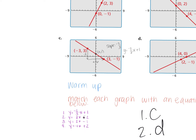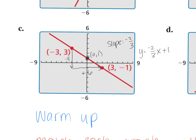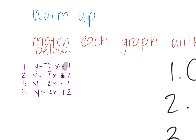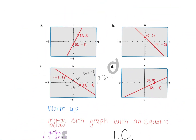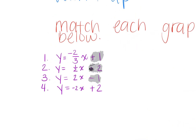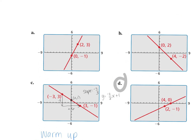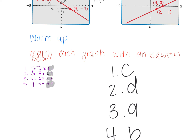Do you guys want to know the easy way to do all these problems? The intercepts are all different, so just match up the intercepts. Let's look at letter C — it goes through zero, one, right? So the intercept must be the only one with plus one, which was number one. The intercept for number two needs to be negative two — which graph has a y-intercept of negative two? It's D. Number three, the y-intercept was negative one — which one has a y-intercept of negative one? A. It goes through zero, negative one. And lastly, B has a y-intercept of positive two.